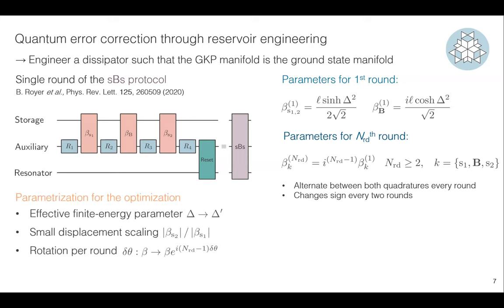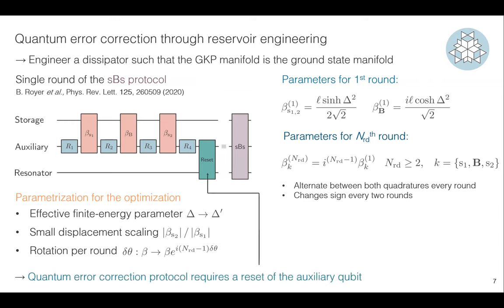On top of the default SBS protocol, we try to parametrize and optimize it with only a few parameters. One thing is that the delta in the correction equations could in principle differ from the delta of initialization. Inspired by work from Yale by Vlad, their optimizer gave different amplitudes for the two small displacements, so we add that as an optimization parameter. Also, because of the always-on dispersive interaction, the state rotates, and we need to apply stabilization along the right axis — another optimization parameter.